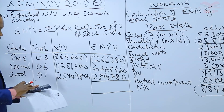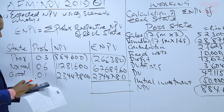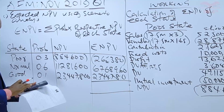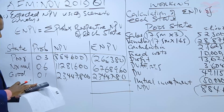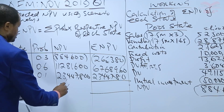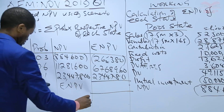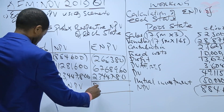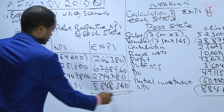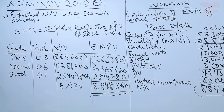Adding 6,768,960 plus 7,034,340 minus 88,460, the expected NPV equals 8,848,360 — that is, eight million, eight hundred and forty-eight thousand, three hundred and sixty. That is the final answer.